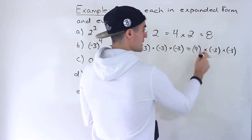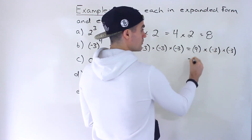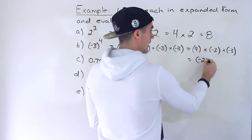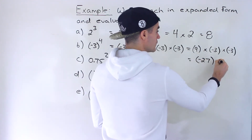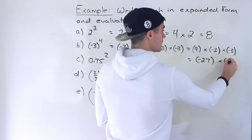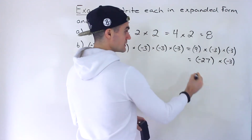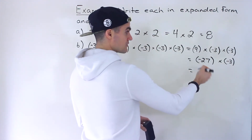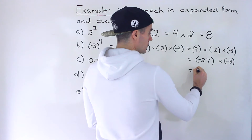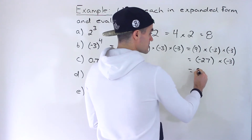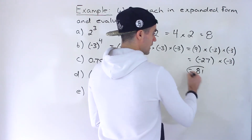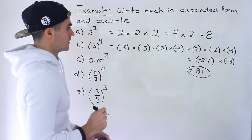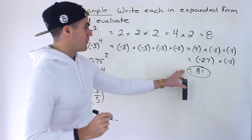We still have the two remaining negative 3s. Then 9 times negative 3 — a positive times a negative gives you a negative. And we still have that times negative 3 at the end. Then negative 27 times negative 3 gives us positive 81. So we end up with a positive answer.